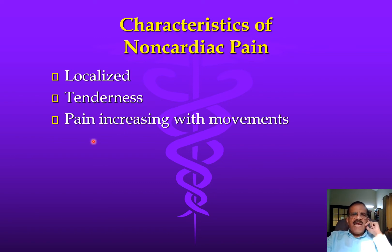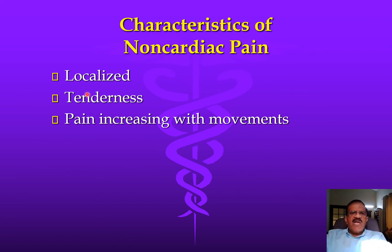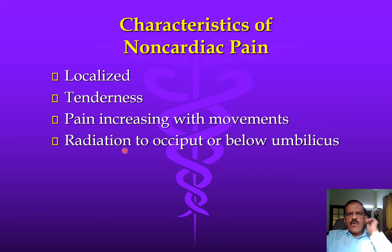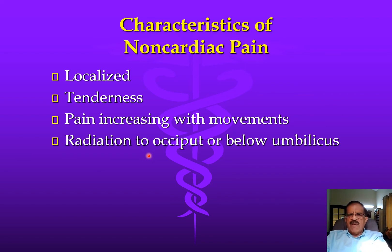Pain that increases with specific movements — not exertion in general, but when the patient moves in a particular direction like bending a certain way — is again likely to be musculoskeletal. Radiation to the occiput is also a clue: ischemic pain usually refers to the jaw, not the occiput. If pain radiates to the occiput, or below the umbilicus — because of the nerve supply, ischemic pain would not go below the umbilicus — that would indicate non-ischemic pain.